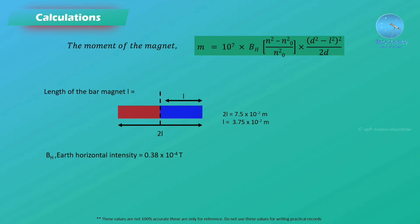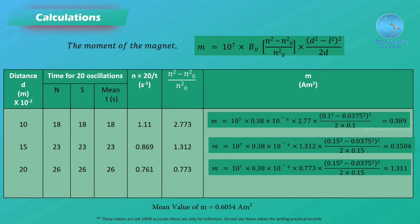The half-length of the bar magnet L = 3.75 × 10⁻² meters. The earth's horizontal intensity B_H = 0.38 × 10⁻⁴ tesla. Substituting all values into the equation, we calculate the magnetic moment M for each distance: 10 cm, 15 cm, and 20 cm.